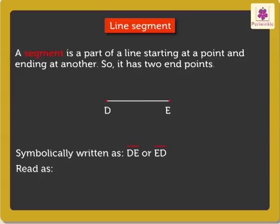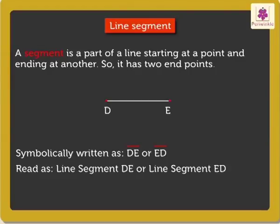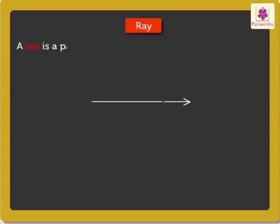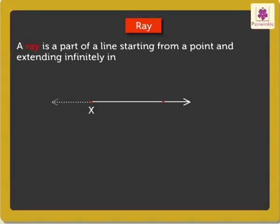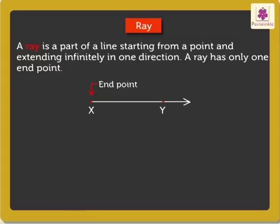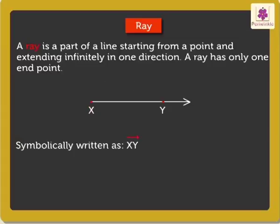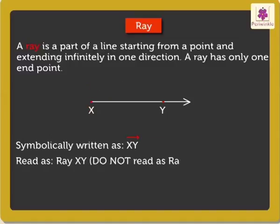Next is Ray. A ray is a part of a line starting from a point and extending infinitely in one direction. A ray has only one end point. X is called the end point of Ray XY. We write it with the symbol of the ray above the letters like this. It can be read only as Ray XY as we always start from the end point. Do not read it as Ray YX.